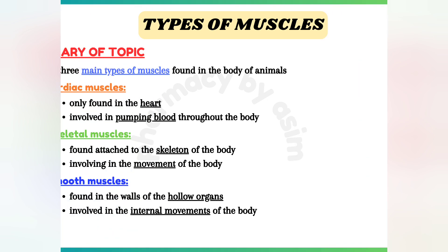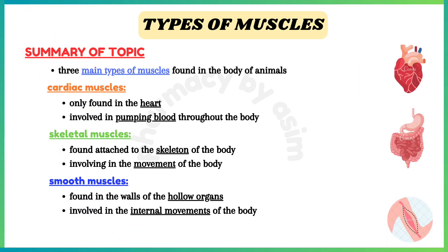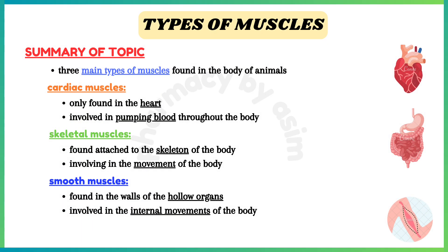In summary, cardiac, skeletal, and smooth muscles are the three types of muscles found in the body of animals. Cardiac muscles are only found in the heart and are involved in pumping blood throughout the body. Skeletal muscles are found attached to the skeleton and are involved in the movement and locomotion of the animal. Smooth muscles are found in the walls of hollow organs and are involved in internal movements, allowing the passage of fluids and food.